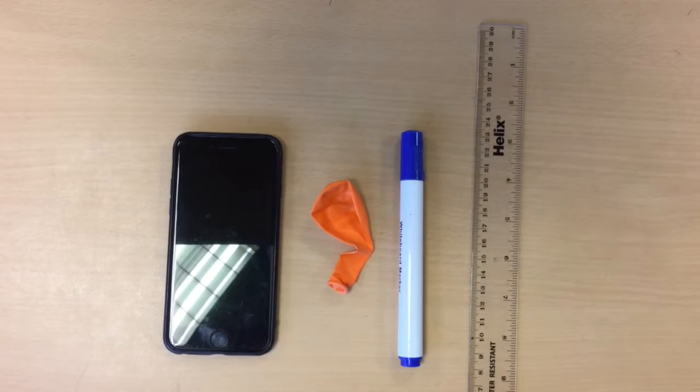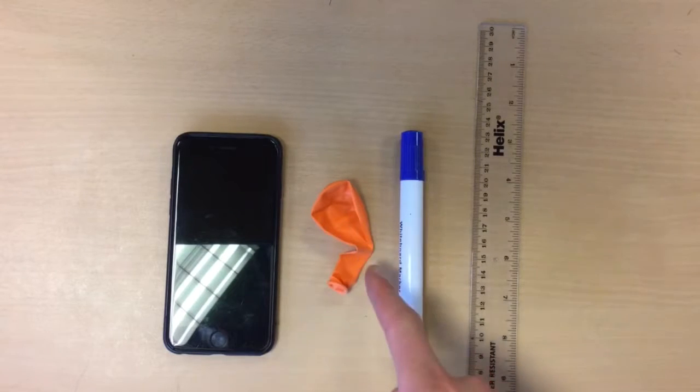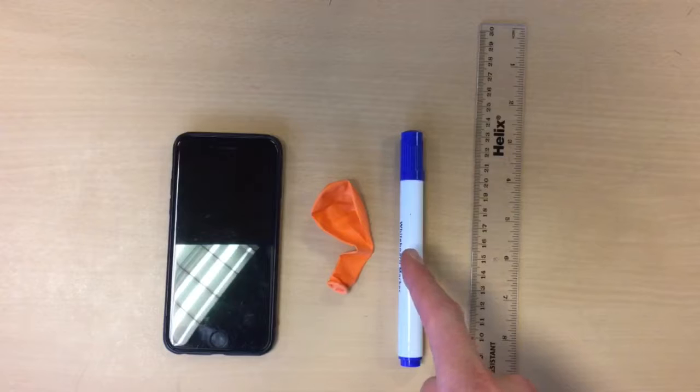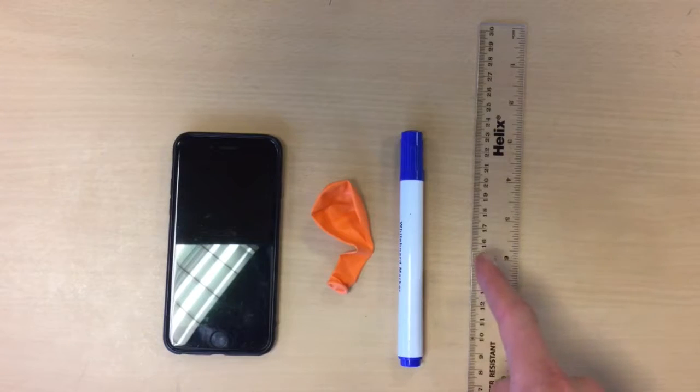Now our aim is to see how blowing a balloon can help us prove the expansion of the universe. Now this is the apparatus we'll need, we'll need a phone, we will need a balloon, we will need a marker pen and a ruler.